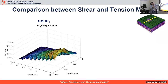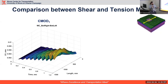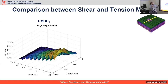Plotting CMOD along the entire length of the asphalt concrete in the transverse direction: as you approach the loading plate edge there is a spike, directly under the loading plate there is a dip — compression from the applied pressure prevents crack opening there — and then again at the other edge of the loading plate there is another spike. As you move away from the load, displacement reduces because you're moving away from the load application zone.